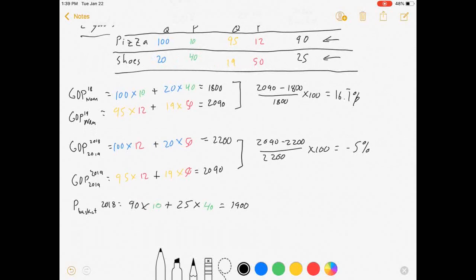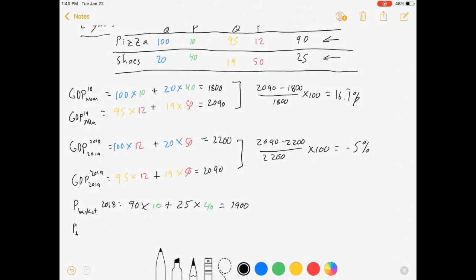Now to buy in 2019, we still keep our same quantities and we're going to choose the 2019 prices, and we get that it equals $2330.